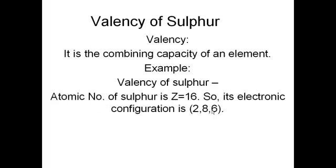In order to find out the valence of any particular atom, we require the atomic number and its electronic configuration. Here the atomic number of sulfur is 16 and its electronic configuration is 2, 8, and 6. This 2, 8, and 6 are the number of electrons present in each shell.